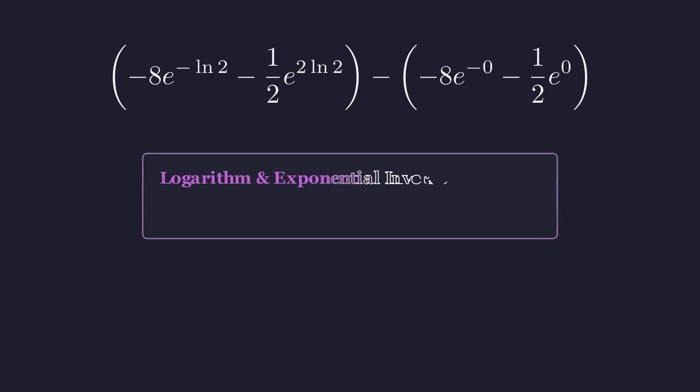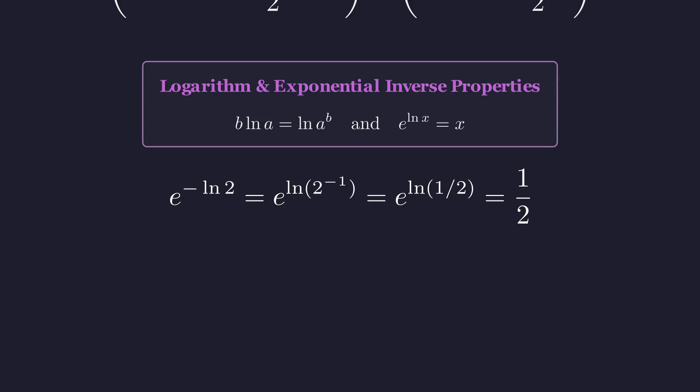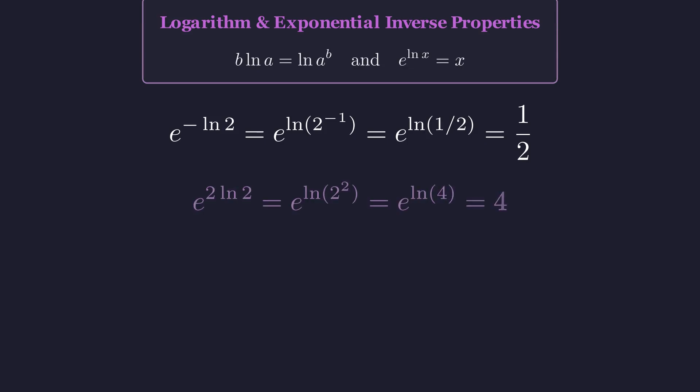To simplify, we need two facts. A coefficient in front of a logarithm can move inside as an exponent, and e to the natural log of something just gives you that something. Let's simplify each of these exponential terms. e to the negative log of 2 becomes e to the log of 1 half, which is just 1 half. And e to the 2 times log of 2 becomes e to the log of 4, which is 4.